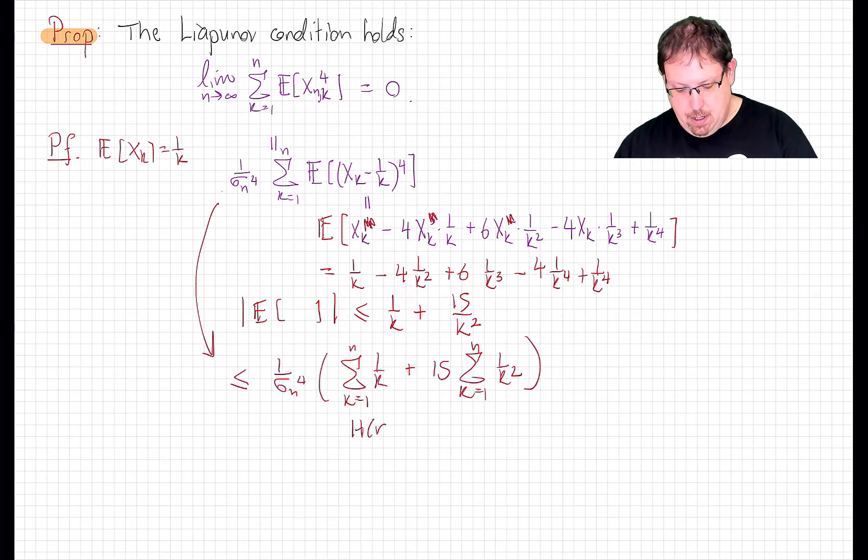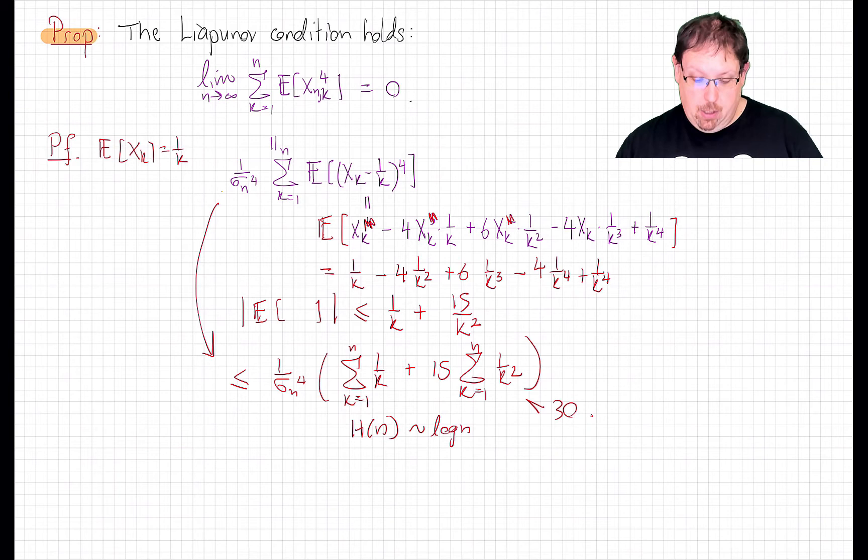The first term there is the harmonic number, which is close to log n. And the second term here is bounded by 15 times pi squared over 6, which is certainly less than, say, 30. Now sigma_n squared, as we showed on the last slide, is approximately log n.